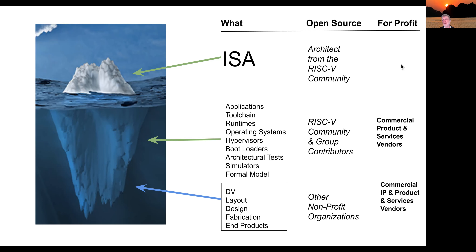Our ecosystem has two parts. One is the open source ecosystem — things that are really implementation independent. The RISC-V community and group contributors help us get those done. In addition, there are things that are implementation dependent. We have other nonprofit organizations that enable you to use their open source licensed work. We're also trying to make sure there's a way for people to make money.